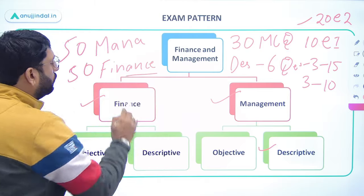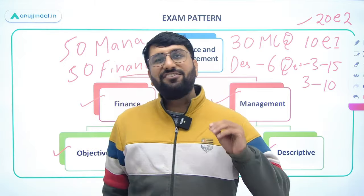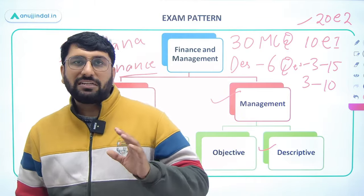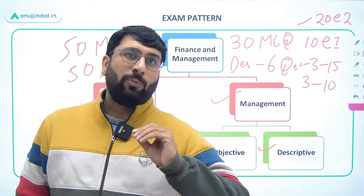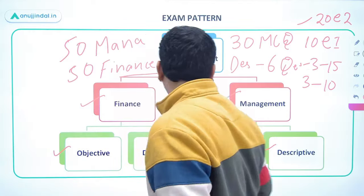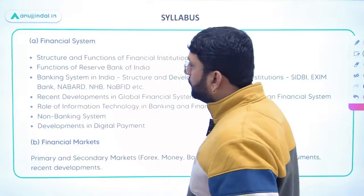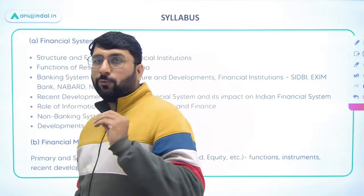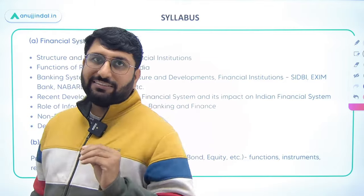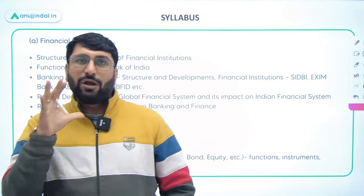In this particular video I am going to specifically talk about how you can score 35 plus marks — effectively targeting 55 plus out of 50 — in your finance domain. The first and foremost thing I want to emphasize is that you have to go through the syllabus very, very thoroughly.